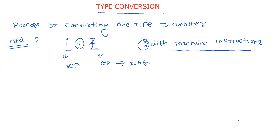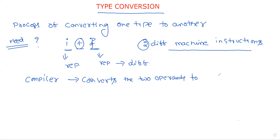To perform an operation between different types of operands, the compiler simply converts the two operands to the same type. That means either float is converted into integer to make both integers, or integer is converted into float to make both floats.